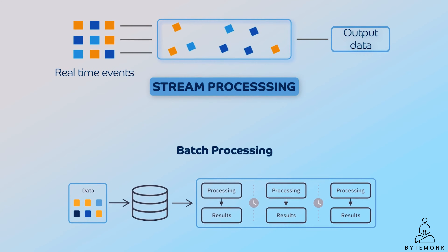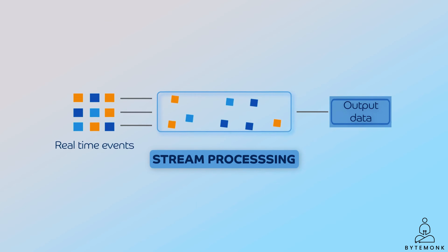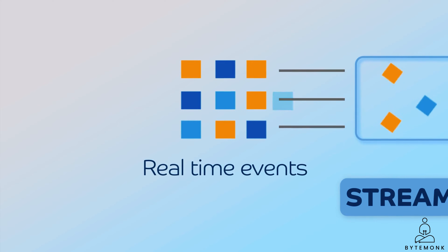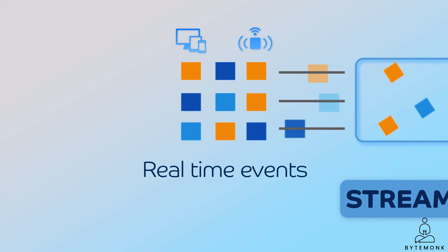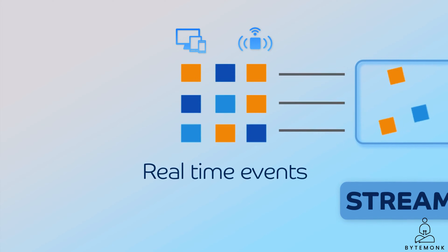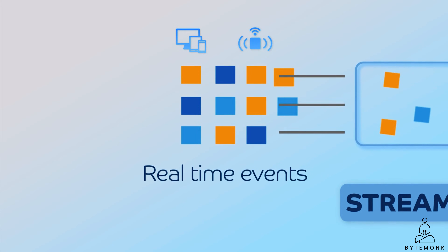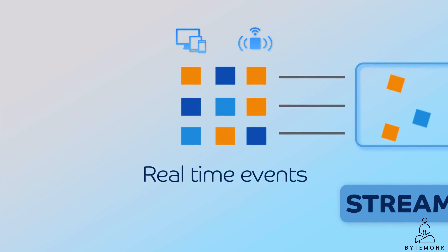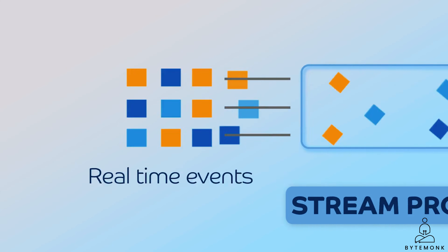Stream processors typically work in three phases: ingest, process, and output. The stream processor ingests data from a variety of sources such as sensors, devices, and applications — for instance, a payment processing system. The data is typically in the form of events, which are short messages that describe something that has happened.